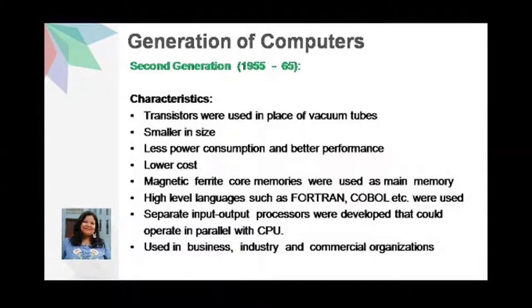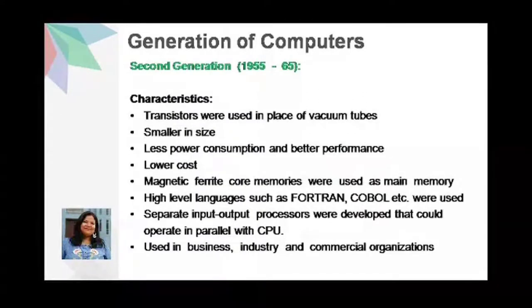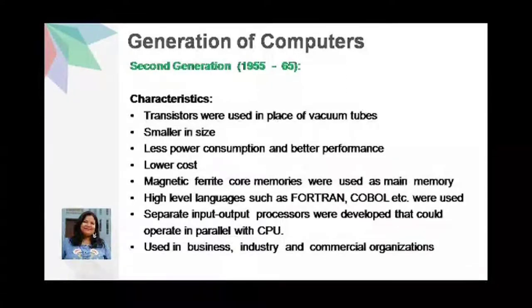Let us look at the characteristics of the second generation of computers. The major change was that transistors were used in place of vacuum tubes. These computers were now smaller in size, consumed less power, and gave better performance. The cost of computers in this generation was considerably lower. Magnetic ferrite core memories were used as main memory.